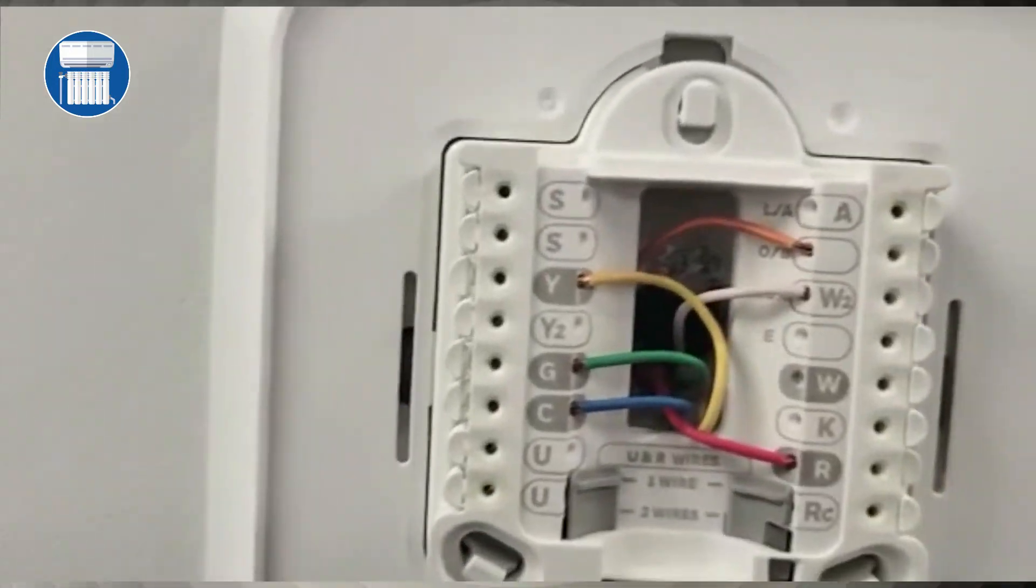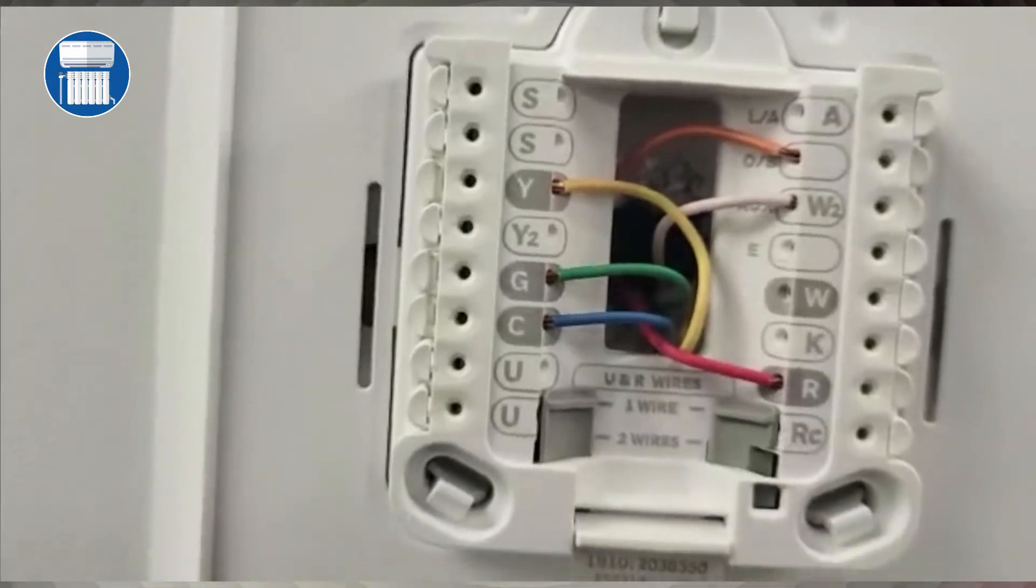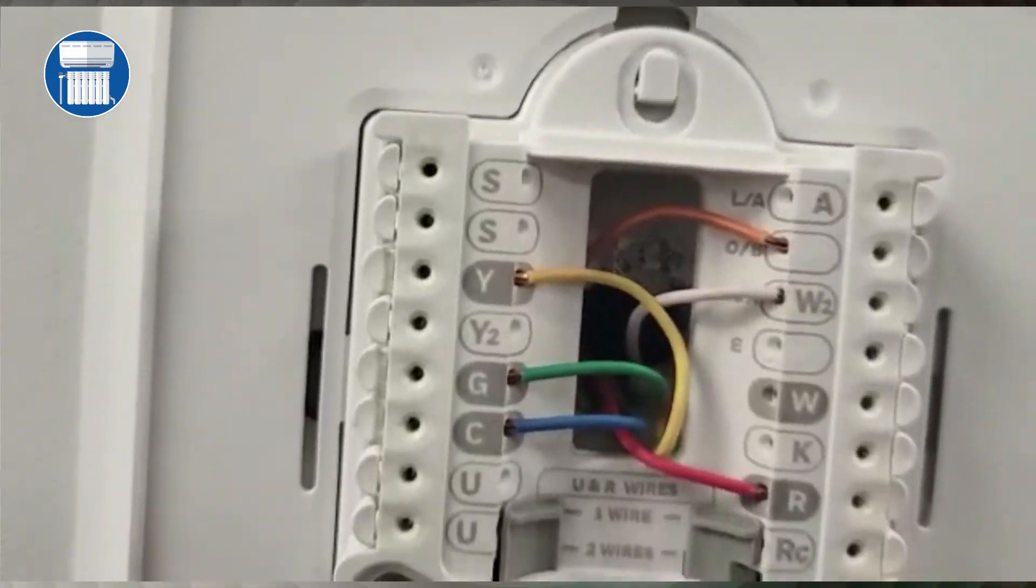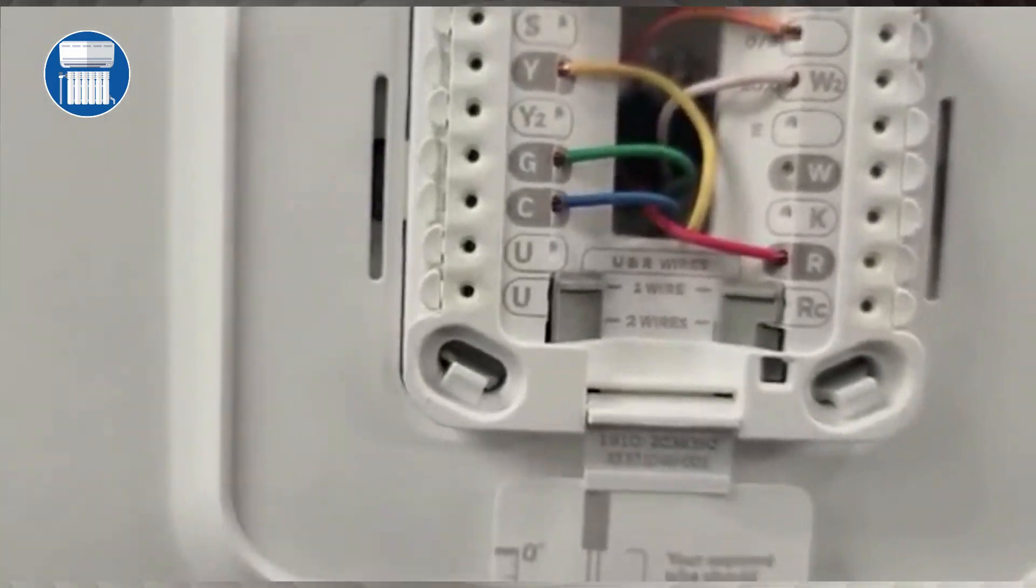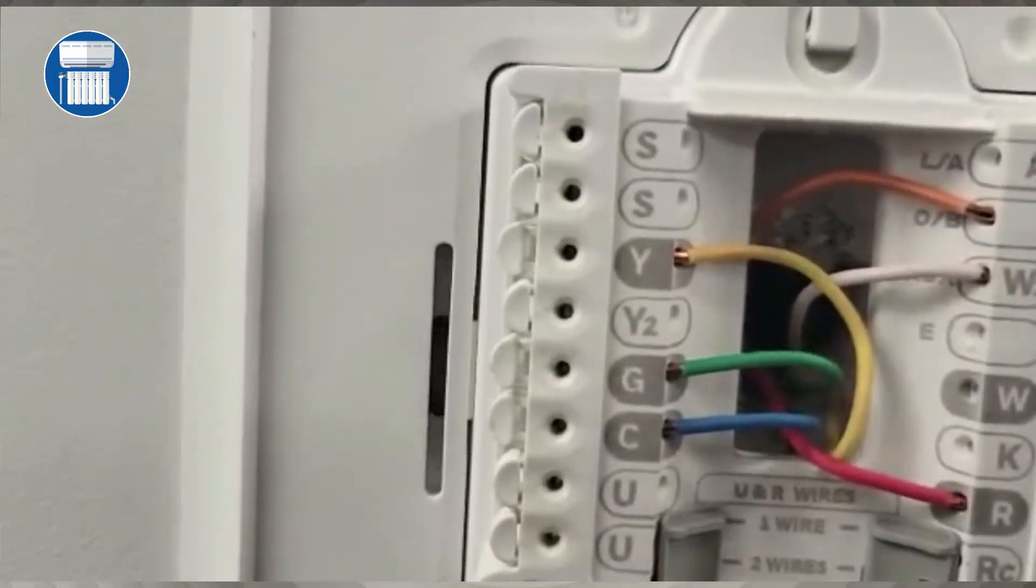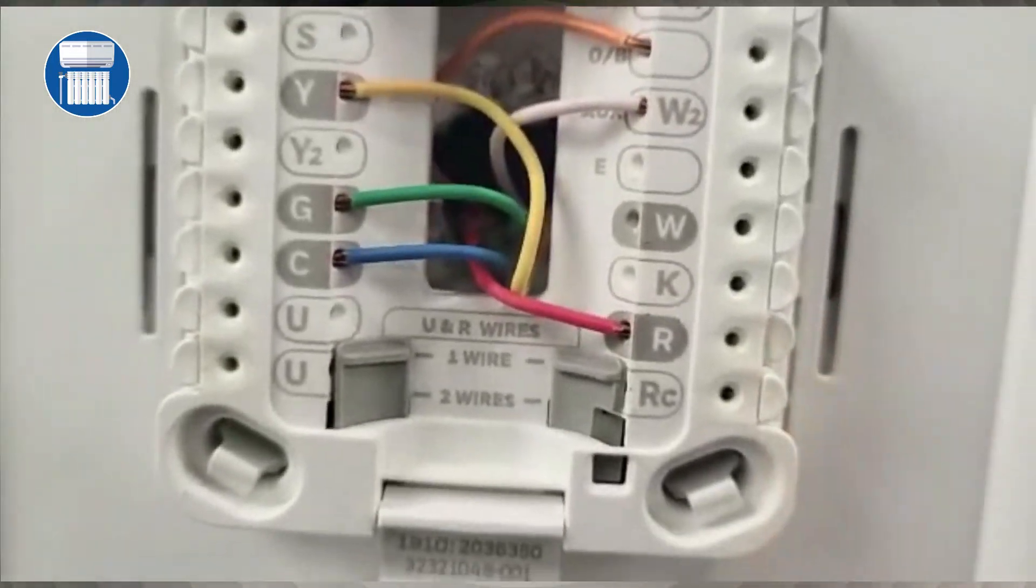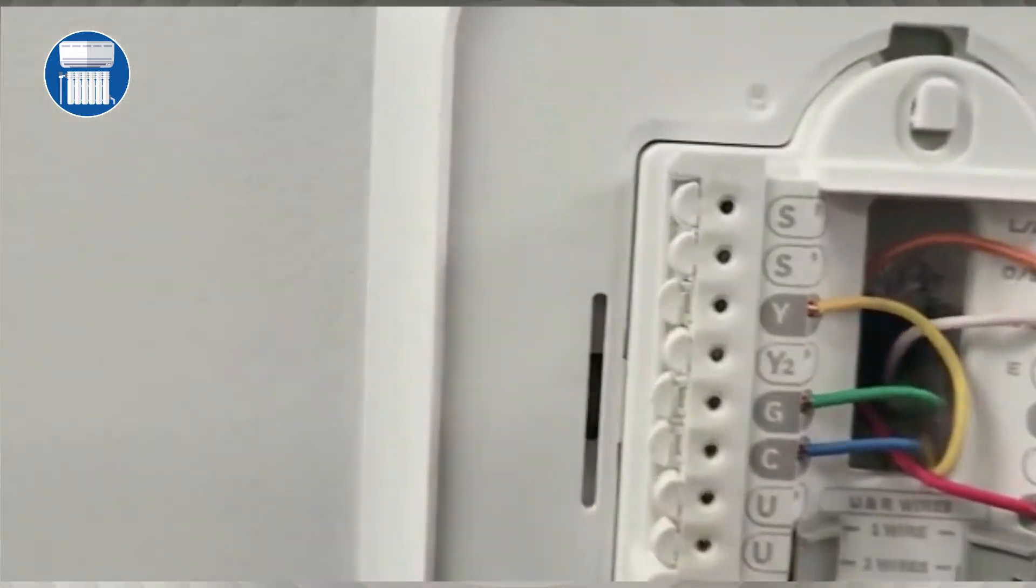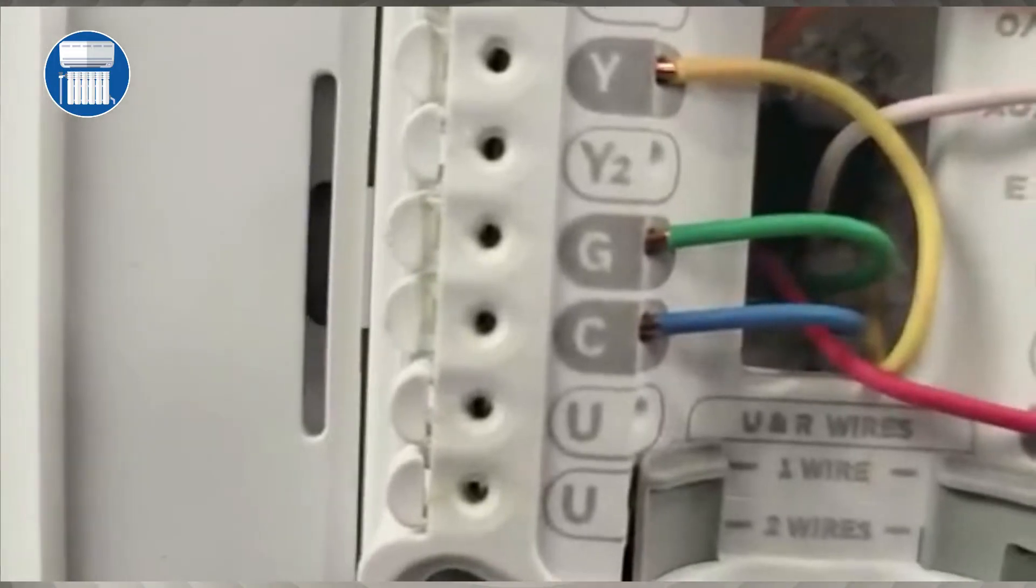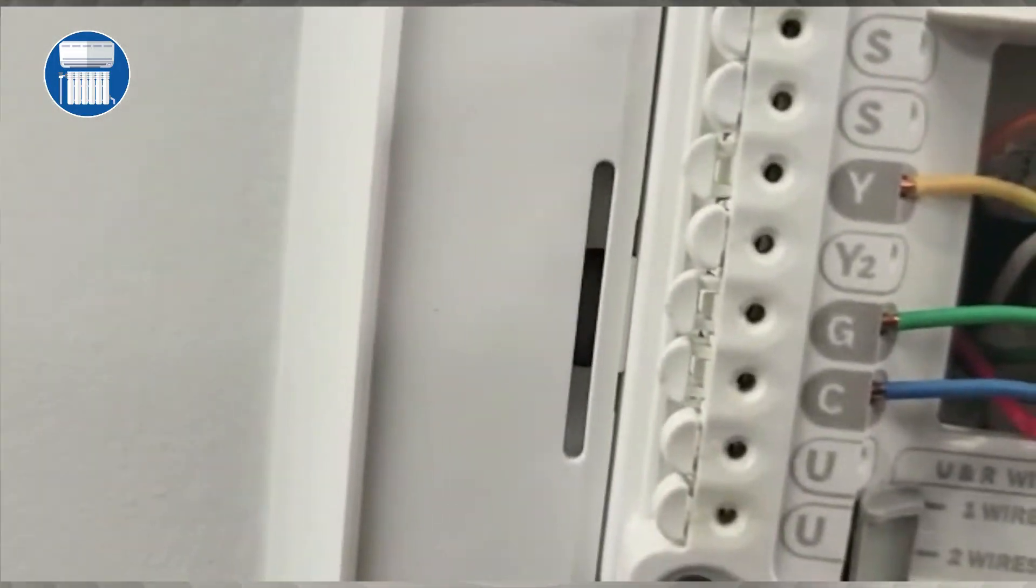First, take your red wire and make sure it's the same one that connected to the red terminal upstairs. This is your power, so you're going to put your power to your R terminal. Then take your common, which is your blue. Once you push these levers off, you can push in the wire and it will clip down. That's your common.